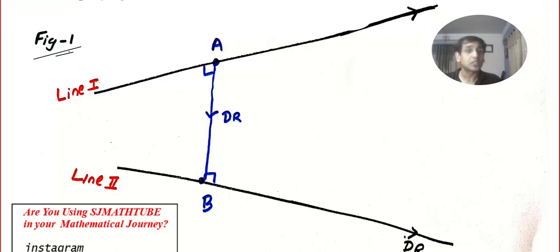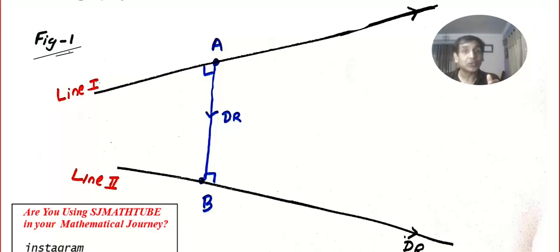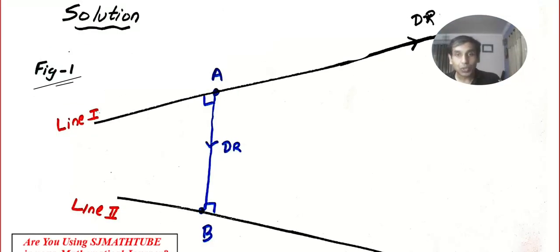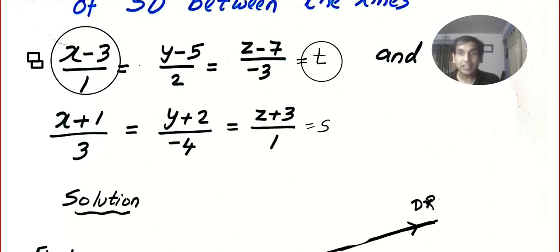I want all of you to draw the figure, because the figure method is the best method — it might be a little lengthy, but it is the most logical method. There are other methods as well; some people find this method lengthy and you can use any method you like in your examination. Let's go for the logical method and convert the first line into parametric form.